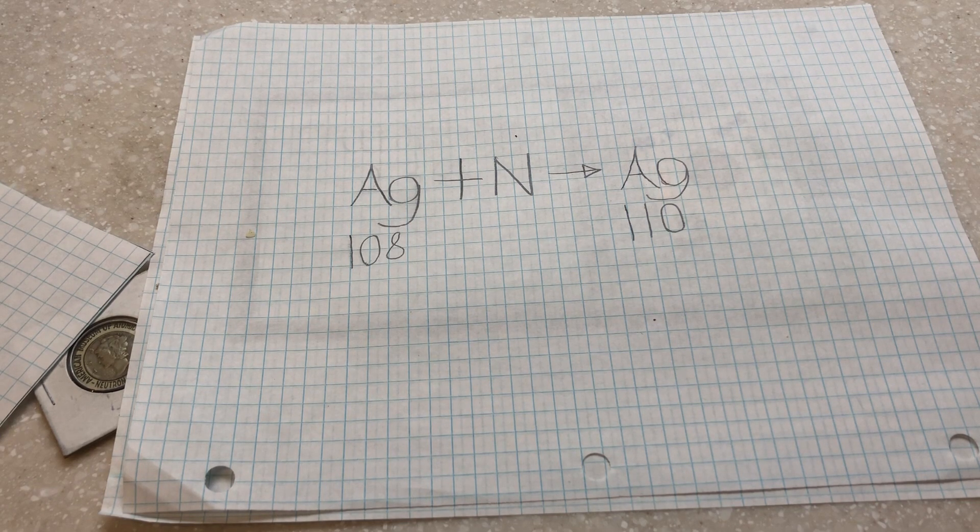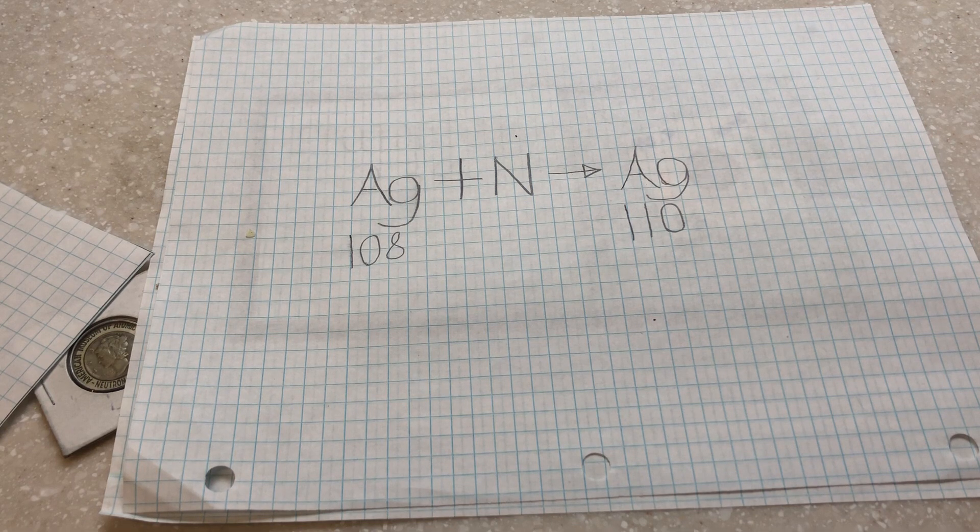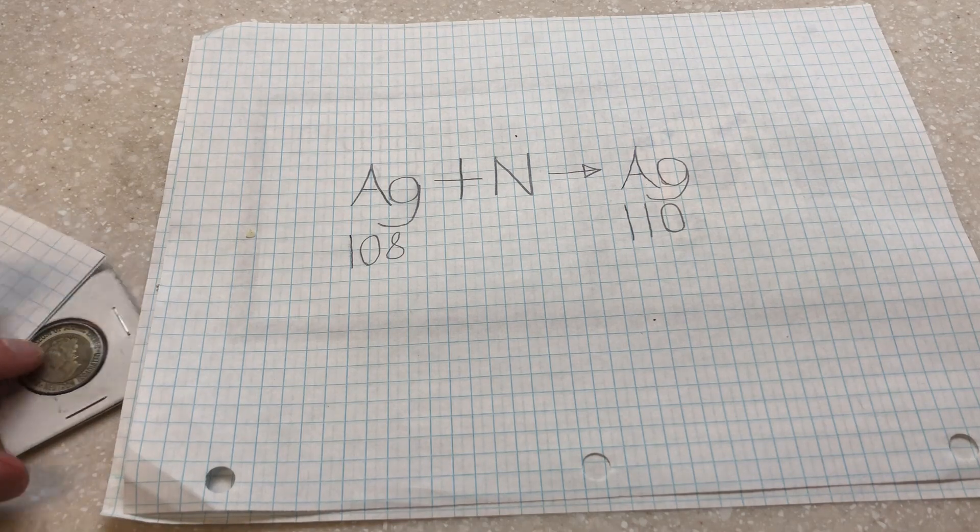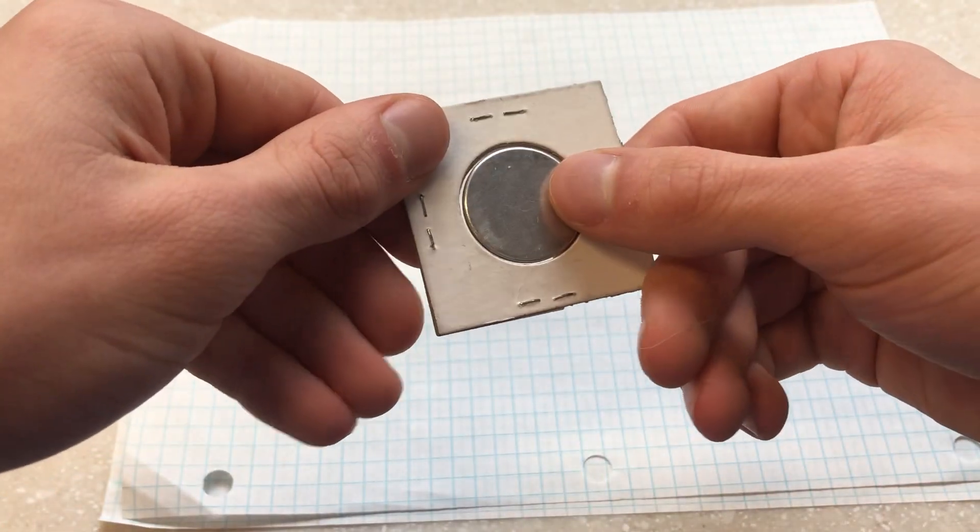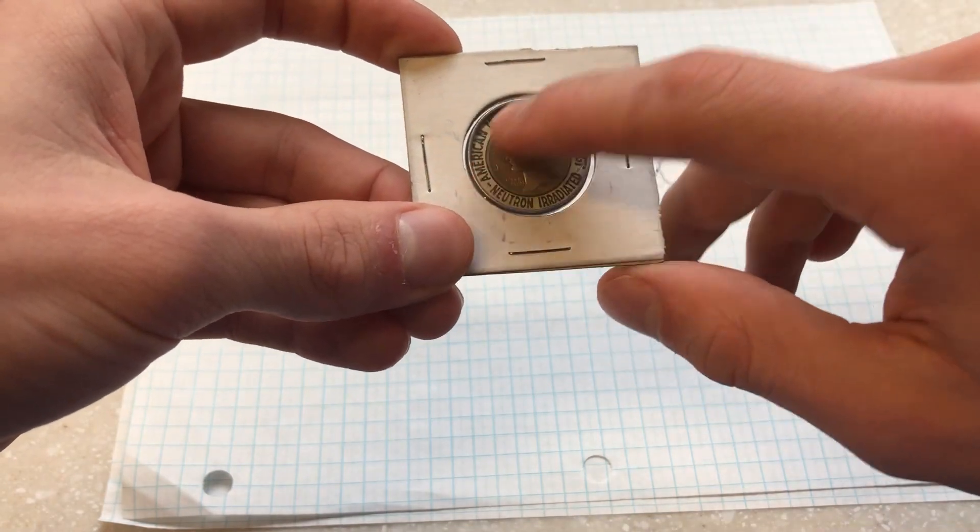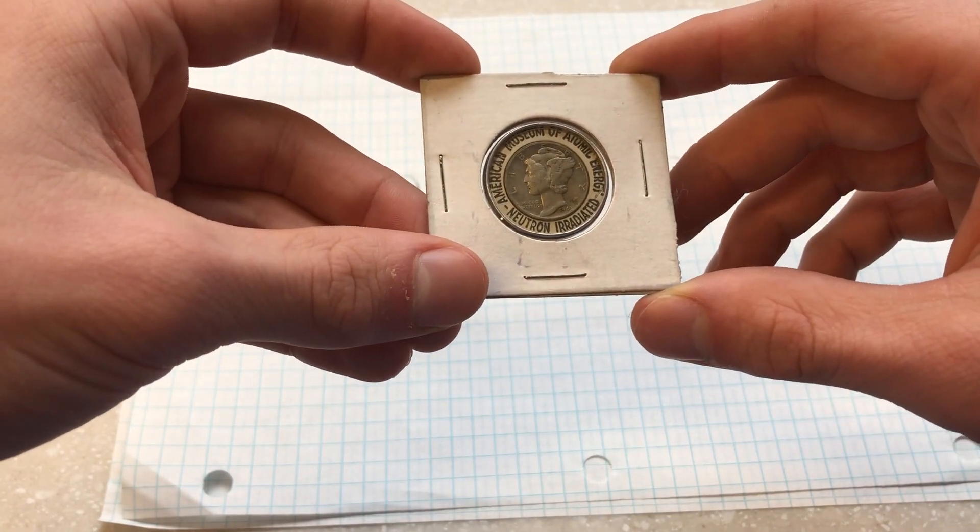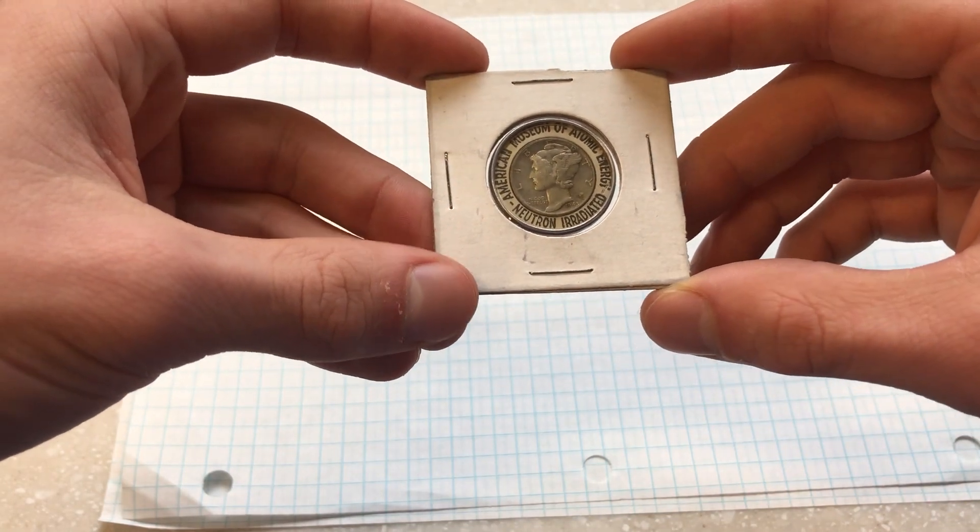Before that happens, the coin is dropped past the Geiger counter, measuring the radiation before the coin is encased with a piece of plastic, a metal casing, and a piece of paper that states American Museum of Atomic Energy, neutron irradiated.